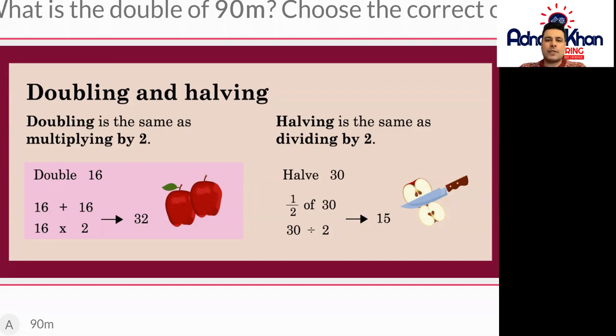When you double 16, for example, you either do 16 add 16 if it's easier for you, or you can do 16 times 2, or 16 multiplied by 2, and it'll give you exactly the same answer: 32.